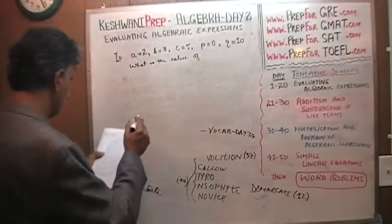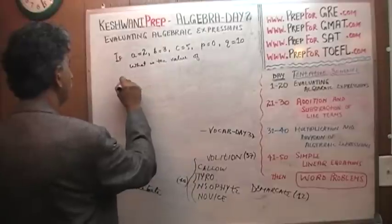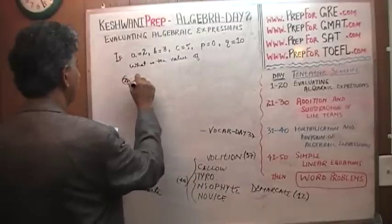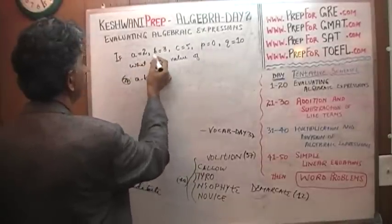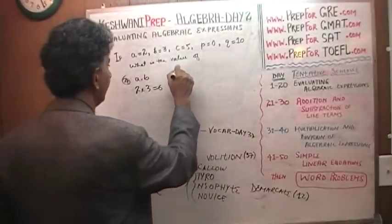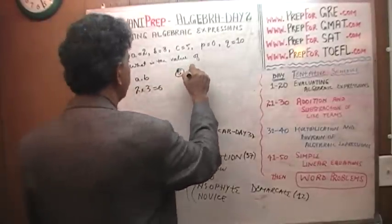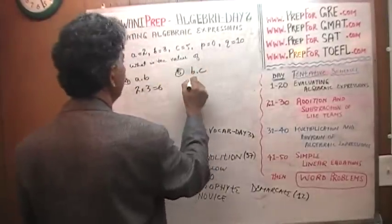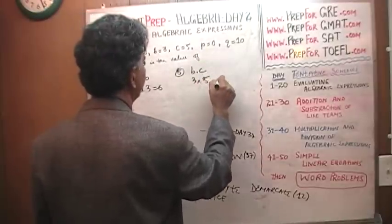I don't remember what number we were on. Let's do number 4. Number 4, a times b. A is 2, b is 3, so it's 6. Number 5, b times c. B is 3, c is 5, so it's 15.